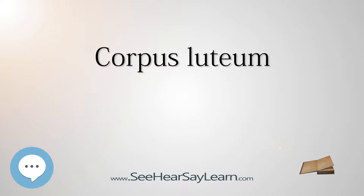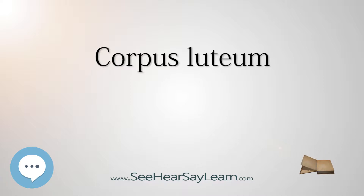It is the remains of the ovarian follicle that has released a mature ovum during a previous ovulation. It is colored as a result of concentrating carotenoids, including lutein, from the diet, and secretes a moderate amount of estrogen to inhibit further release of gonadotropin-releasing hormone (GnRH), and thus secretion of luteinizing hormone (LH) and follicle-stimulating hormone (FSH). A new corpus luteum develops with each menstrual cycle.